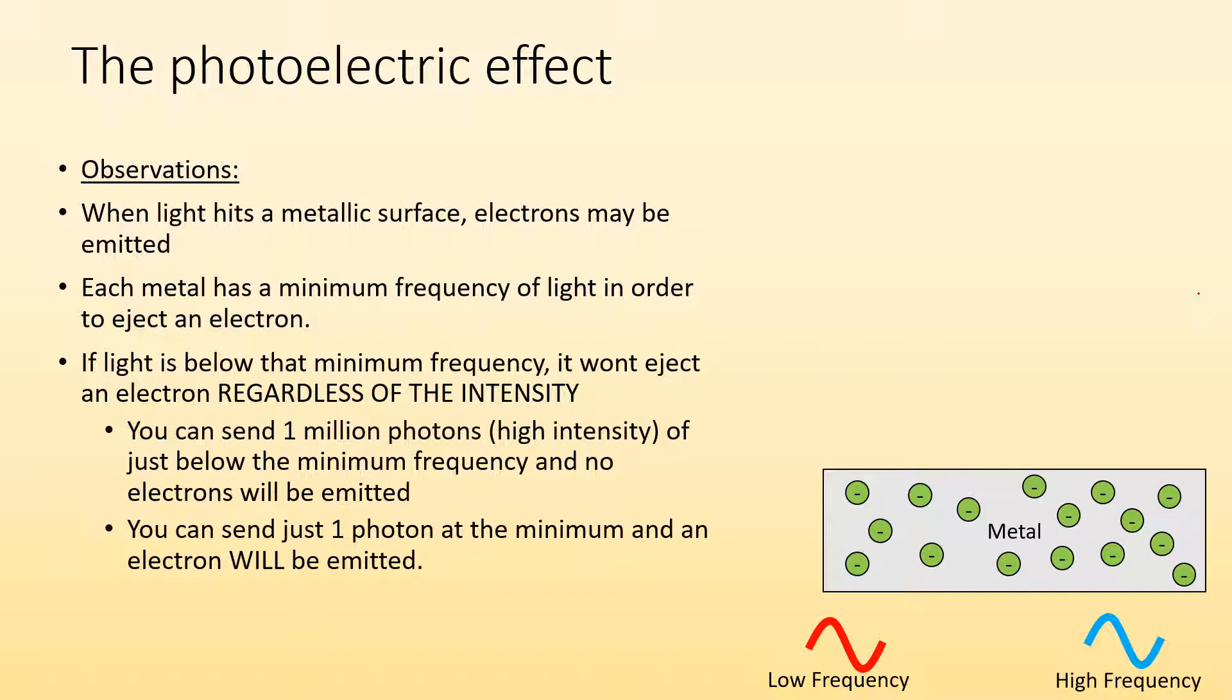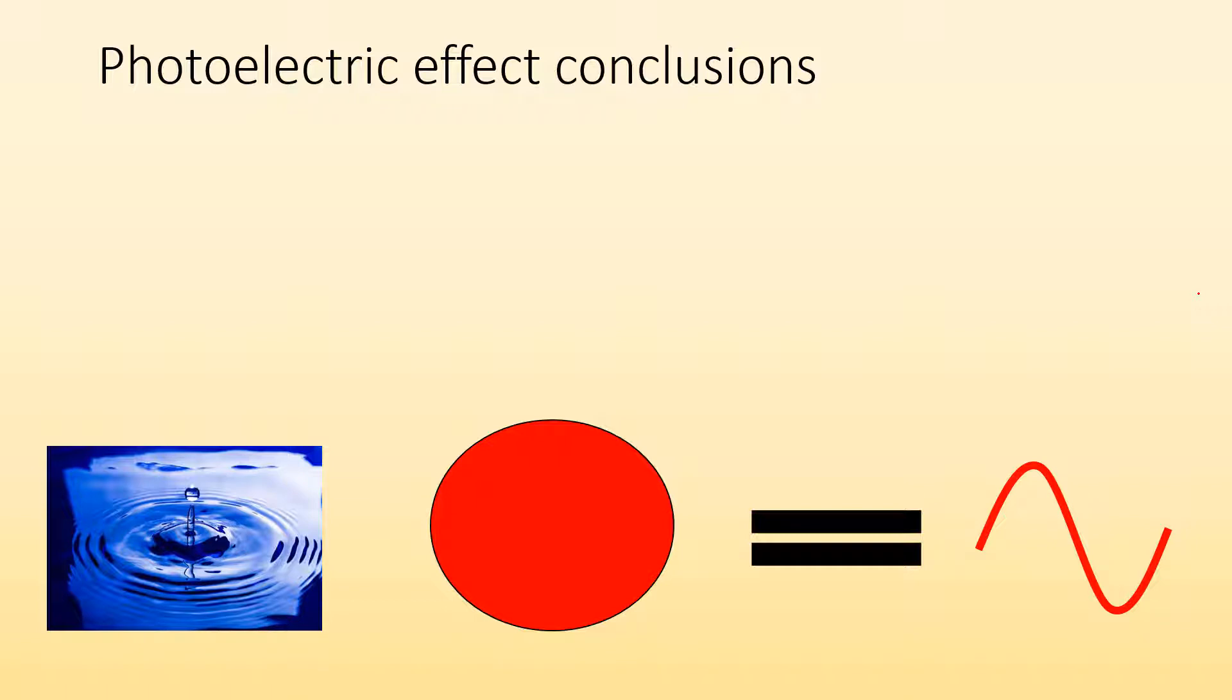Whereas if we send just one photon of the high frequency that's above that minimum, an electron will be emitted. Even though it's not high intensity, it's got high enough energy for that photon to kick off an electron. So what does that mean? What can we conclude from that?